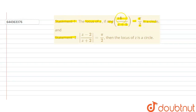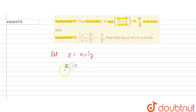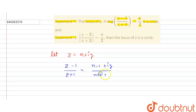First we work with the given expression. Let z equal x plus iy. So what is (z minus 1) divided by (z plus 1)? We are finding the value of this: it equals (x minus 1 plus iy) in the numerator, and (x plus 1 plus iy) in the denominator.